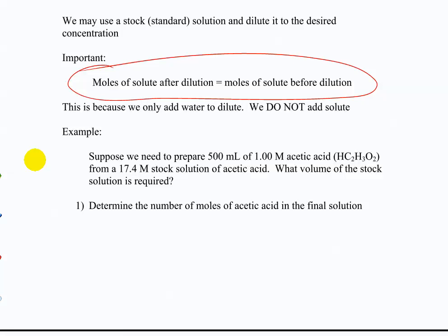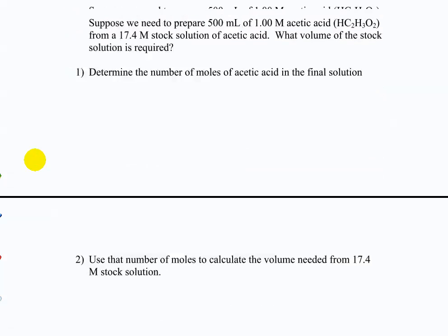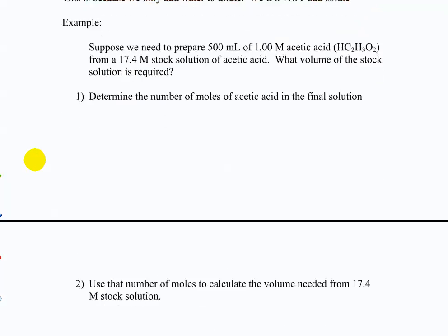This is true for all kinds of situations — for example, administering medicines, which are often in a concentrated form that must be diluted to the desired amount. So you need to figure out how many moles you want in the final solution, then figure out how many moles the stock solution actually has. Let's work through it step by step before using the shortcut equation. How many moles of acetic acid do we need in the final solution?